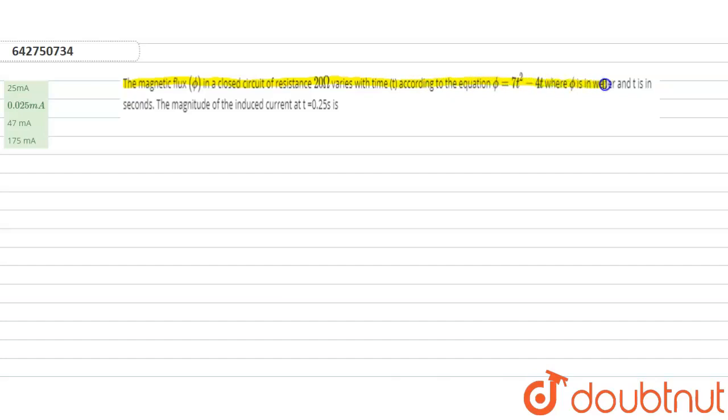Where phi is in weber and t is in seconds. The magnitude of the induced current at t is equal to 0.25 second is... So our solution is: